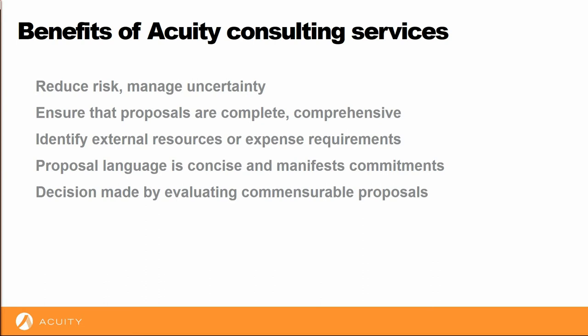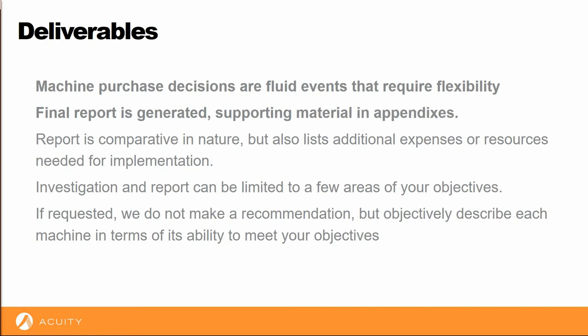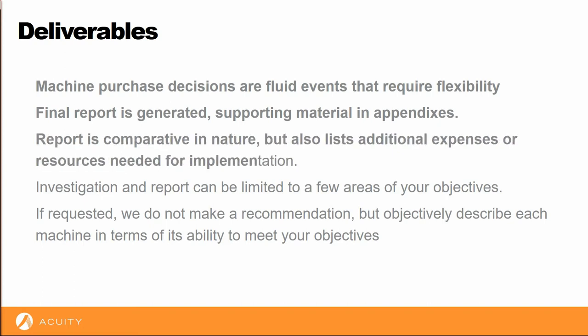Let's discuss the way Acuity services works and the way we structure our deliverables. We understand that flexibility is required during a machine purchase decision. Some information we obtain will need to be shared immediately, and we will need to be working with people in your organization who independently obtain information. The need for flexibility also extends to the project objectives. Shop managers may learn of a new machine feature that causes them to change their objectives, and we stand ready to respond to this. We will generate a final report with any material gathered in an appendix. The general format of the report is to create a scenario for each candidate machine explaining the requirements to implement, expenses, resources, and a schedule.